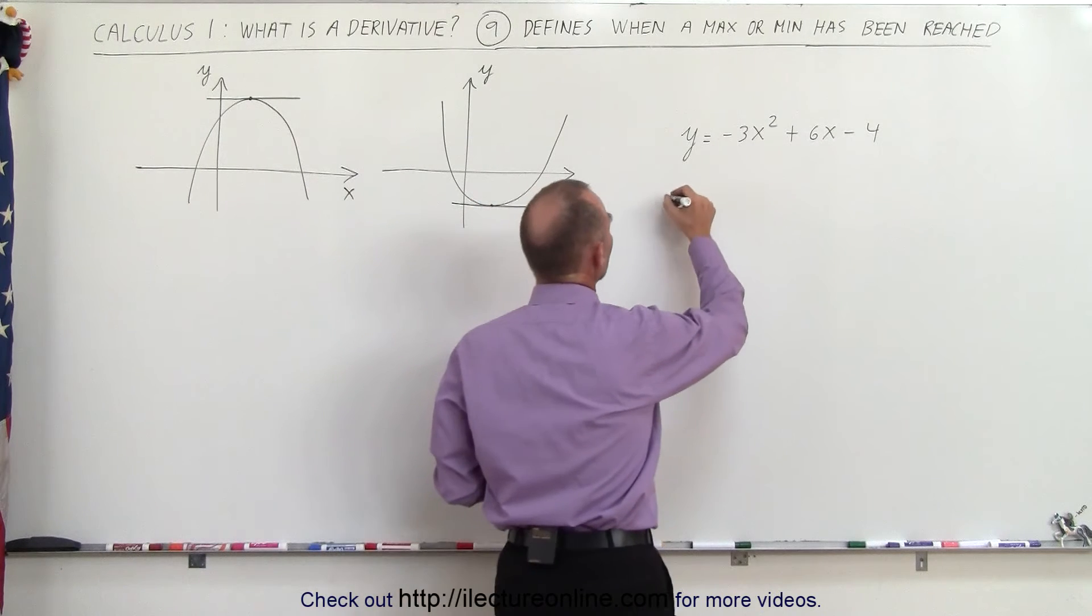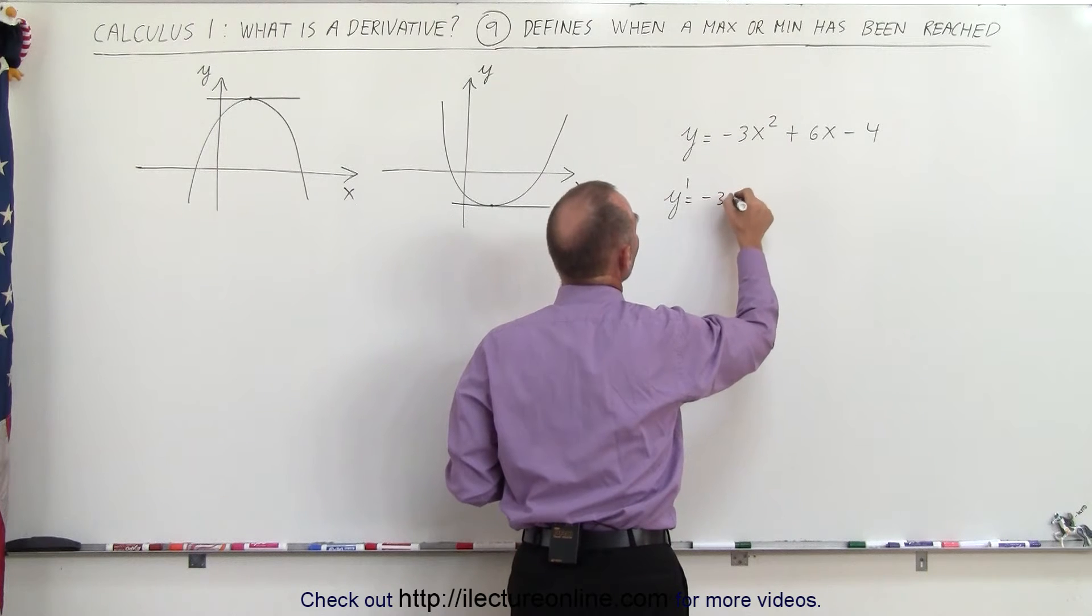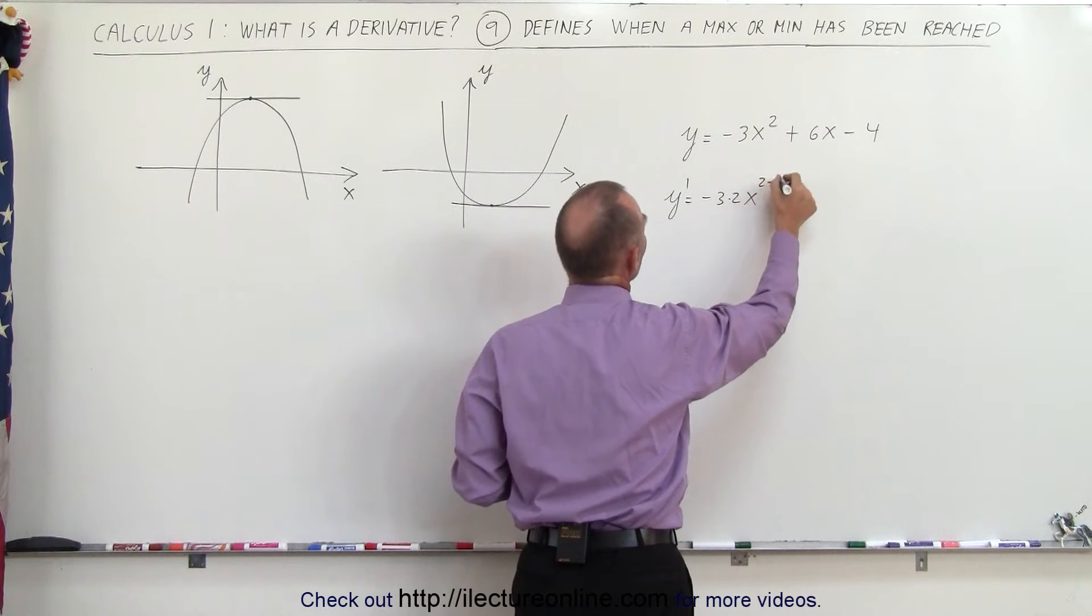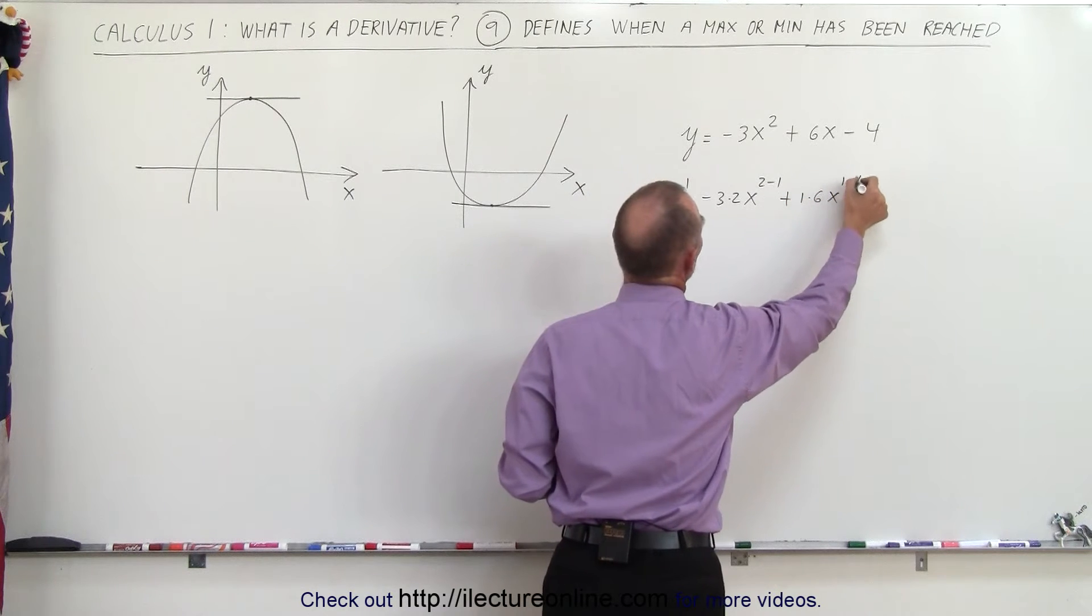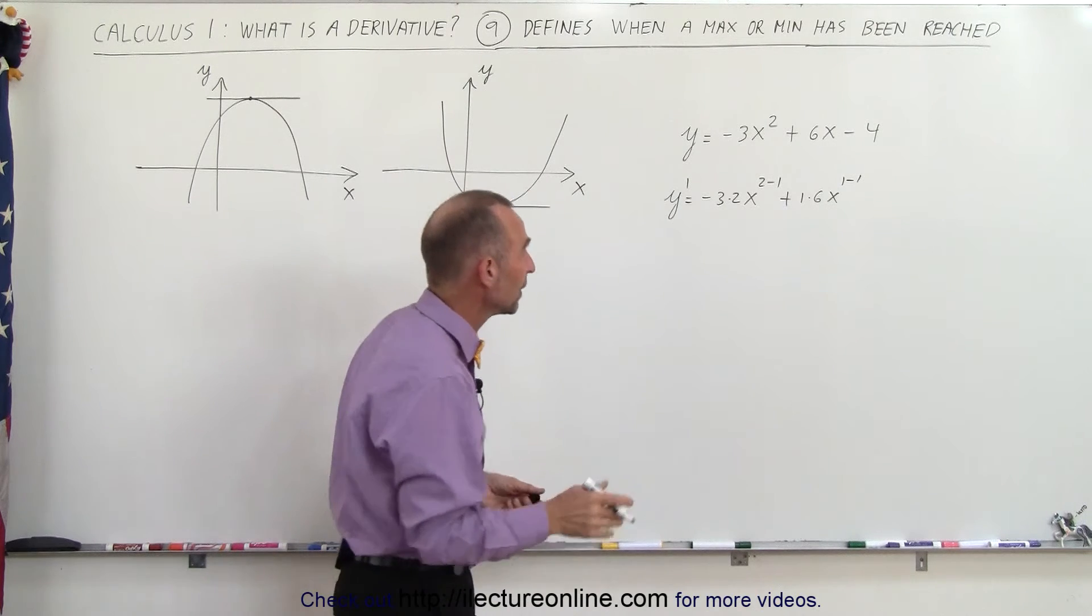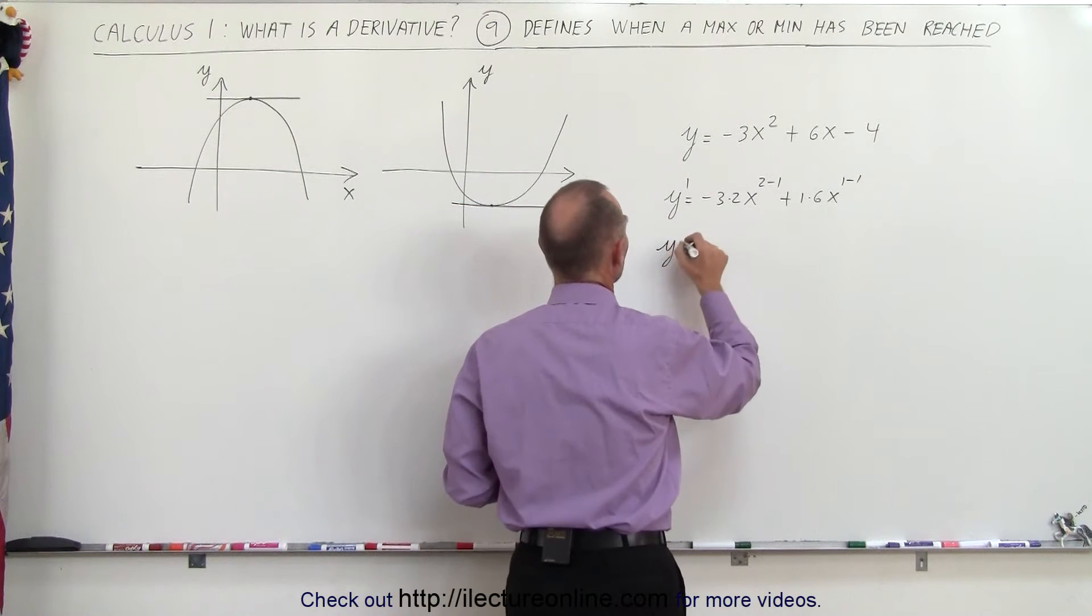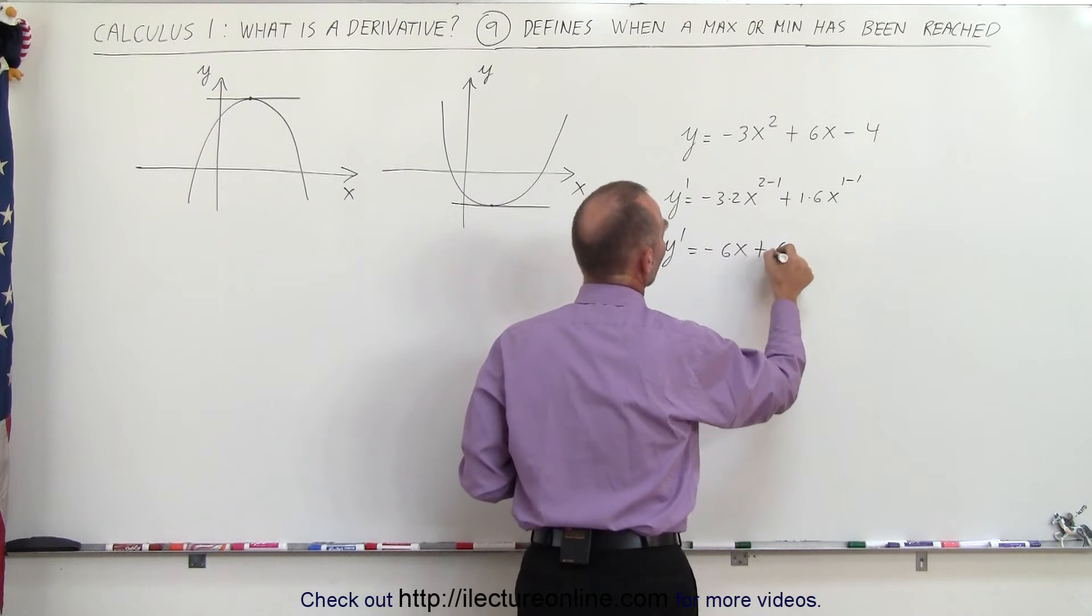So we're going to find the derivative. Y prime is equal to, bring the exponent to the front, minus 3 times 2x to the 2 minus 1 value plus 1 times 6x to the 1 minus 1 value, plus of course zero because the derivative of a constant is zero. And so this can be simplified to y prime is equal to minus 6x plus 6.